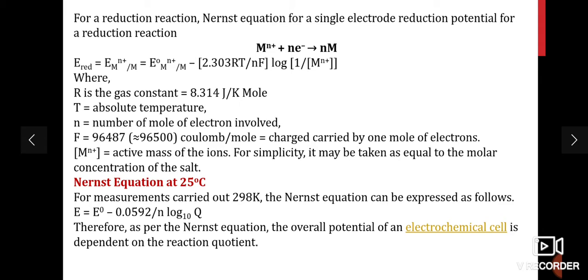Here, M^n+ refers to the active moles of ions, which for simplicity may be taken as equal to the molar concentration of the salt. The Nernst equation at 25°C simplifies to: E = E° − (0.0591/n) × log Q, where Q is the reaction quotient. Therefore, as per the Nernst equation, the overall potential of an electrochemical cell depends on the reaction quotient.